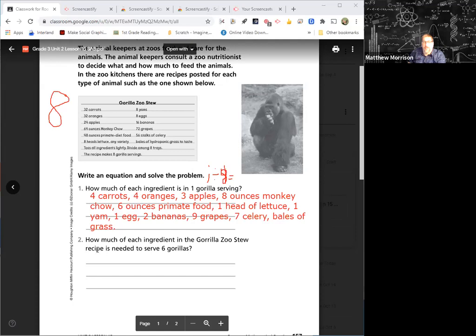So this is eight, this is one. Now it says how much of each ingredient of the gorilla stew is needed to make six gorillas? If this is for one, how would I figure out how many for six? Yes, you are right—you would multiply each of these by six. Number two is your secret question for the day. You are going to put this answer, which is six times larger than this answer, into the chat after the math lesson. That's what you're going to do—put your answer of how much food is needed for six gorillas.